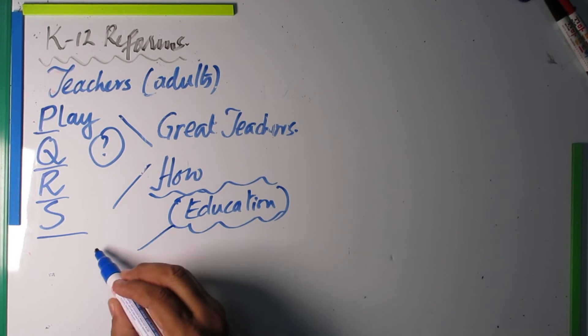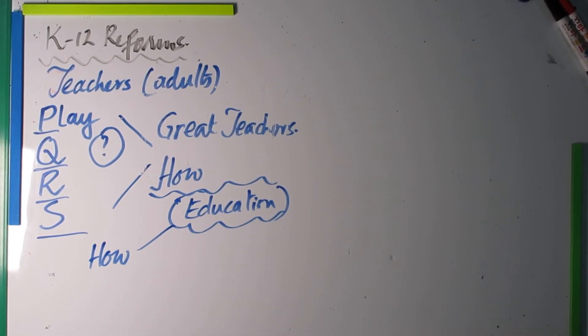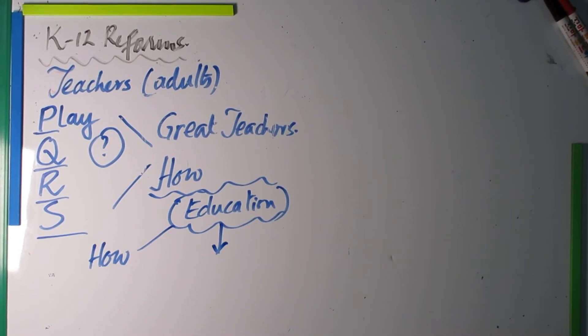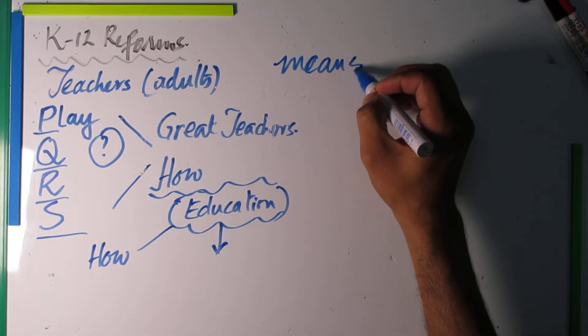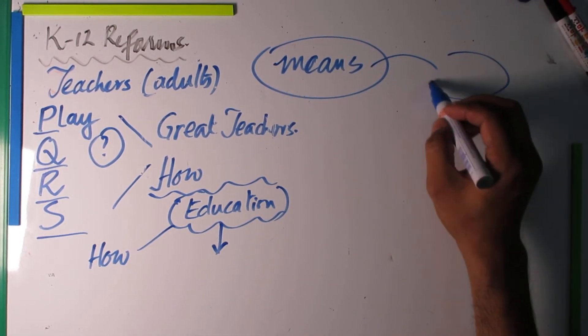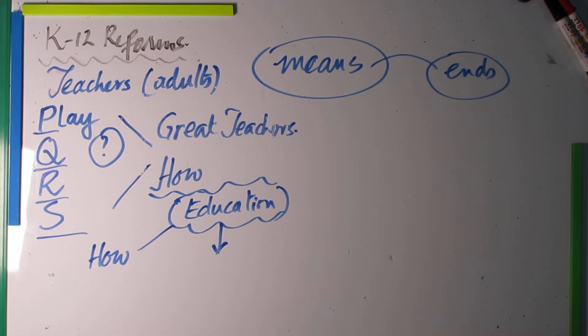The how part is this, but the other part, the problem part, is what at the end of this process we are going to get, because these are means. Many times we adults are stuck up with the means, losing sight of the ends.